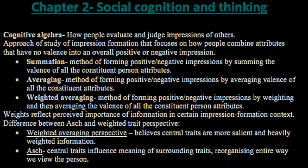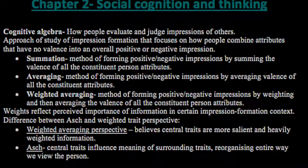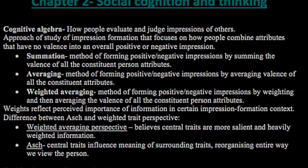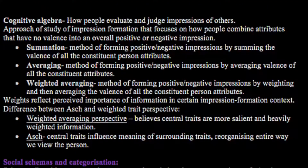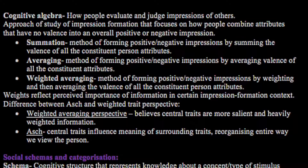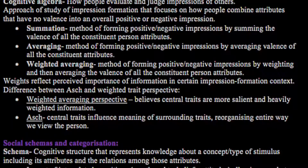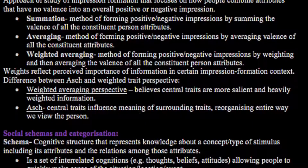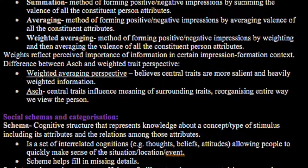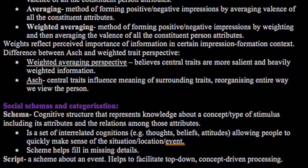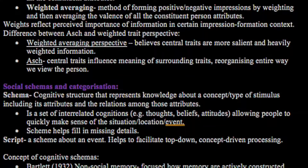Cognitive algebra concerns how people evaluate and judge impressions of others through combining attributes that have a valence into overall positive or negative impressions. Methods include summation — forming impressions by summing the valence of all constituent person attributes — and averaging, which averages those positive and negative traits together. Weighted averaging weighs and then averages the valence of all constituent person attributes; the weights reflect perceived importance of information. The weighted averaging perspective holds that central traits are more salient and heavily weighted. In Asch's view, central traits influence the meaning of surrounding traits, reorganising the entire way we view the person.